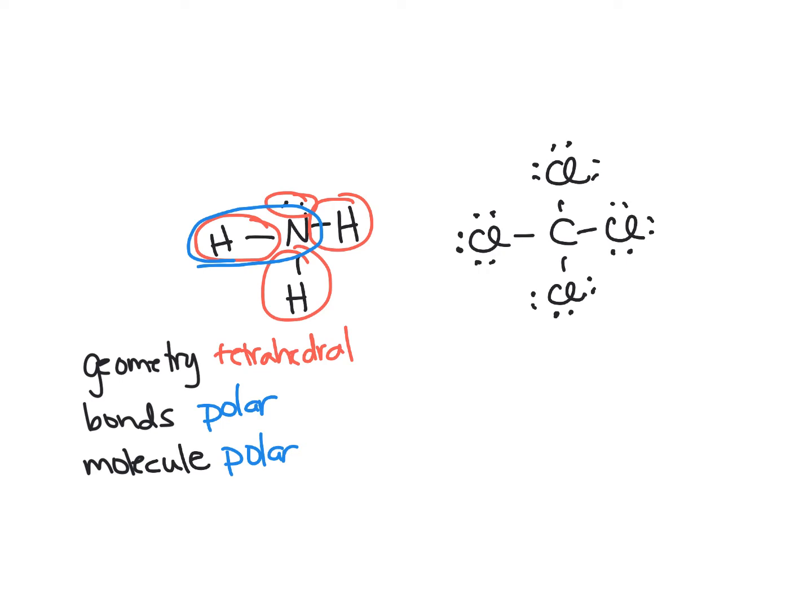Now let's look at carbon tetrachloride. Again, we have four groups around our central atom, so that tells us we have tetrahedral geometry.